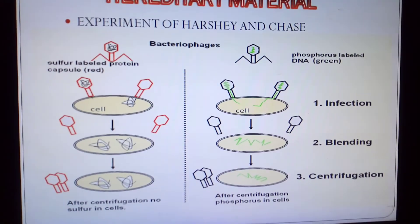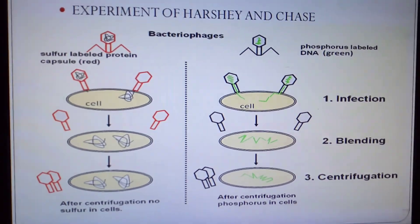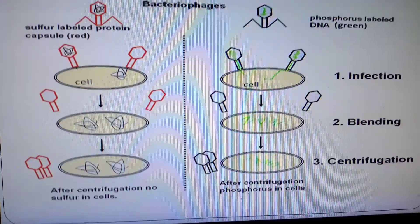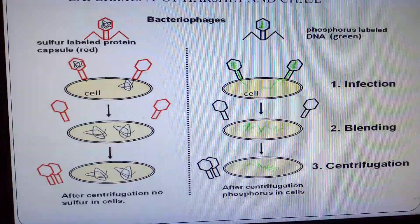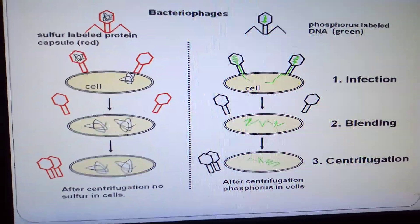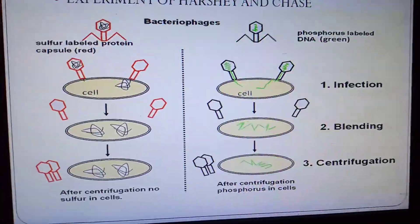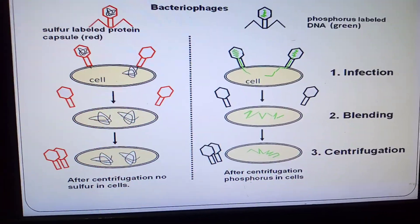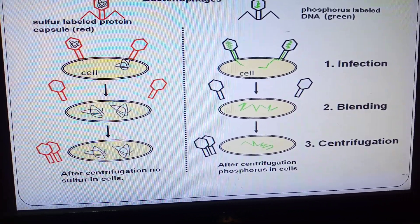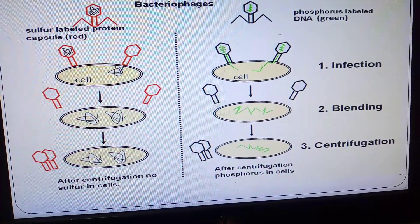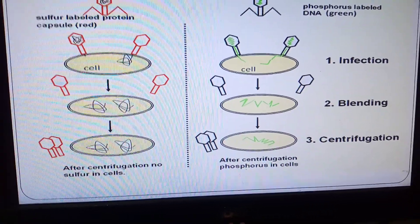The next proof of hereditary material comes from the experiment of Hershey and Chase. They used a bacteriophage with two labels: sulfur-labeled protein (shown in red as the capsid) and phosphorus-labeled DNA (shown in green). The bacteriophage injects the cell. After infection and centrifugation, no sulfur is found inside the cells, but phosphorus is found inside the cells, proving that DNA — not protein — enters the host cell.